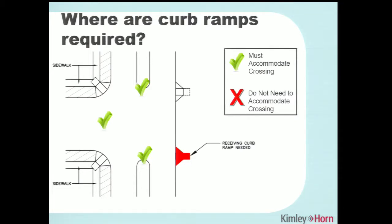Visual examples of where curb ramps are required: anytime you have sidewalk leading up to a curb you need a curb ramp, and you also need a receiving curb ramp on the opposite side of the road. This gets tricky when you didn't want pedestrians crossing the entire street — for example, a major street intersecting a minor street. You need to think carefully about curb ramp design and orientation in advance, because a diagonal curb ramp implies pedestrians can cross in both crossing directions.